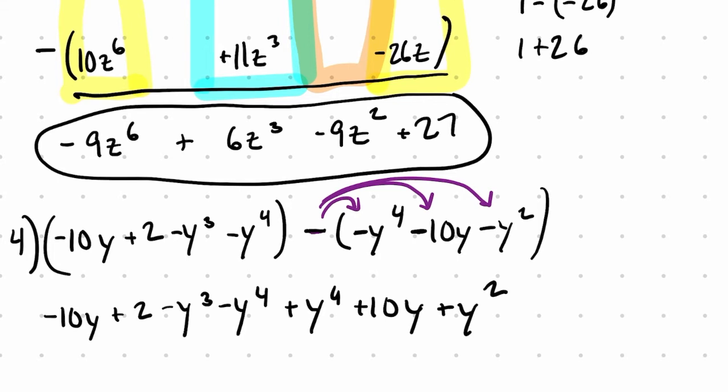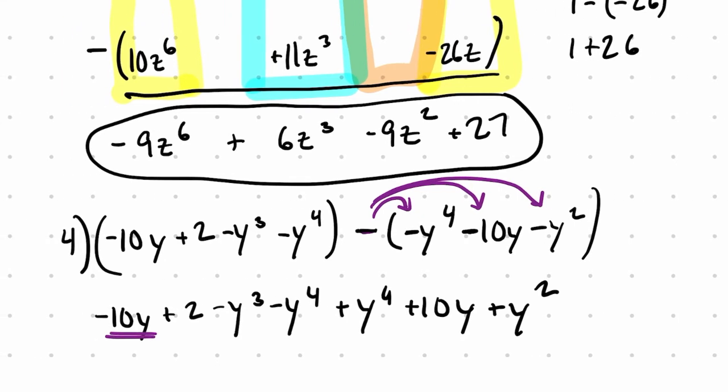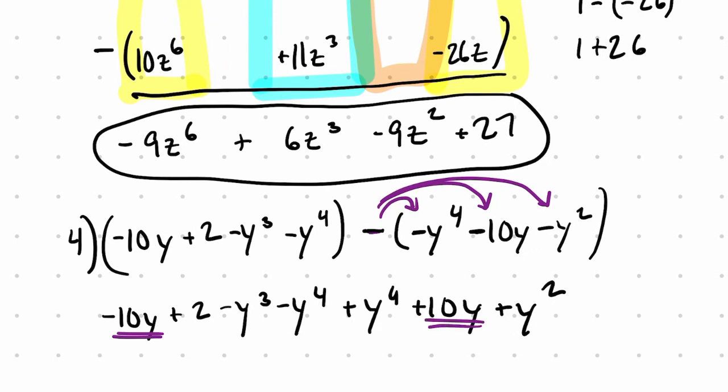Now, you can use color, but also kind of underline. I see y to the first, negative 10y, and positive 10y. Those cancel. So I'm just going to x them. Because at this point, what you're really doing is adding all the terms.